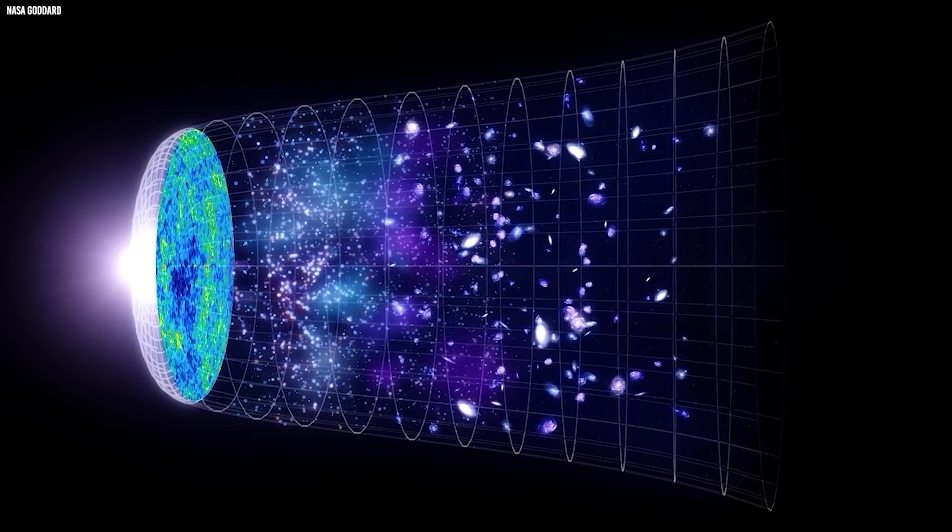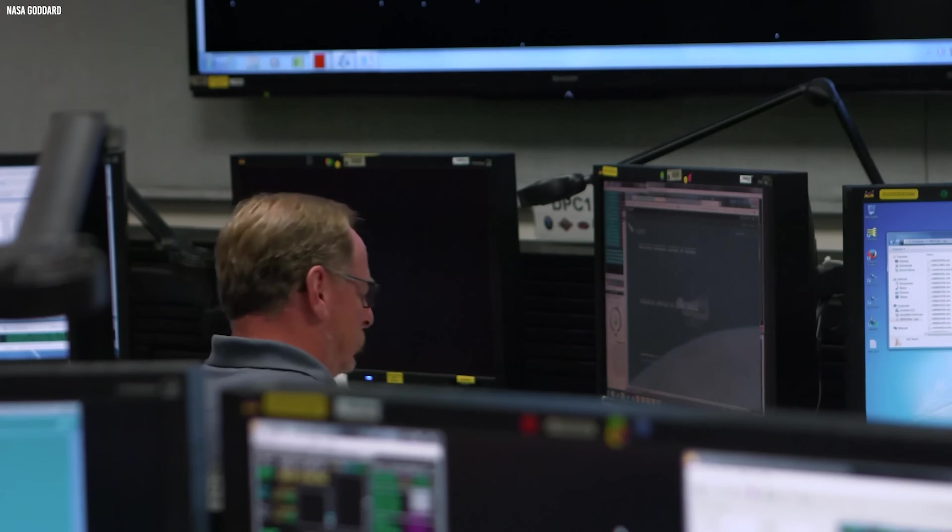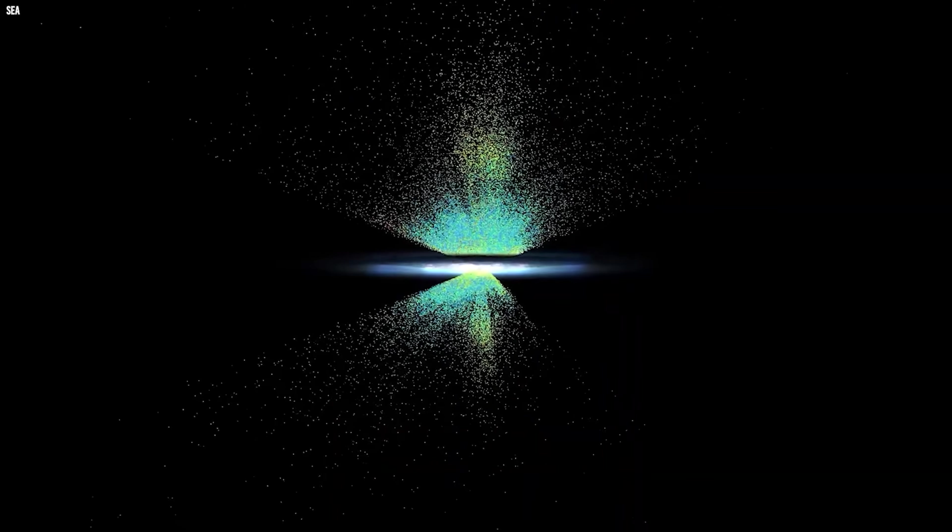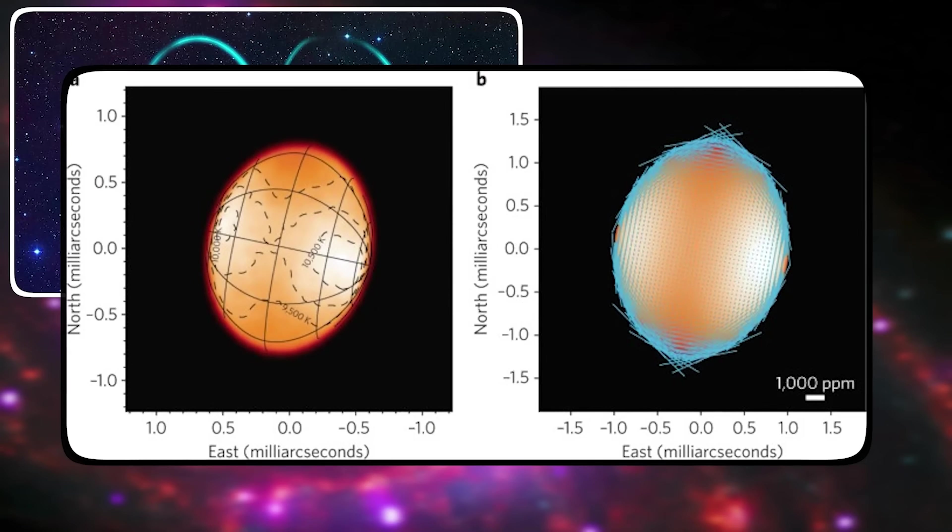What does extreme curvature of spacetime itself do to the quantum vacuum? To answer that, they stripped the problem down to its essentials. Their model uses a perfectly spherical star with uniform density, floating in empty space. By removing distractions like spin, magnetic fields, or surface complexity, they could isolate the pure effect of spacetime curvature on quantum fields.